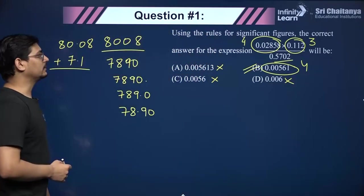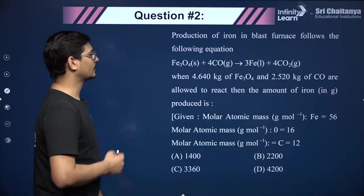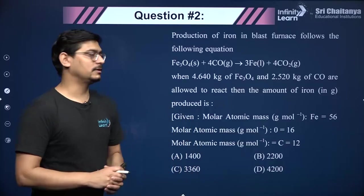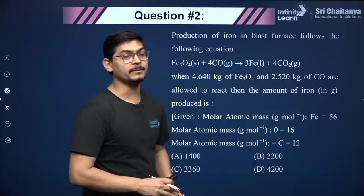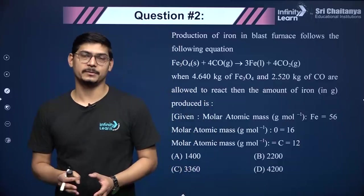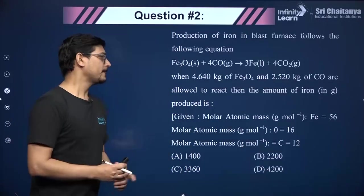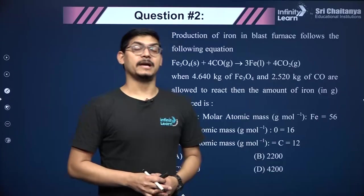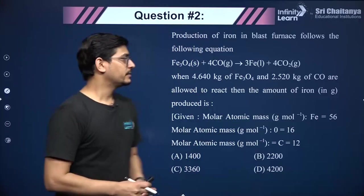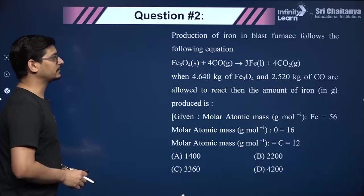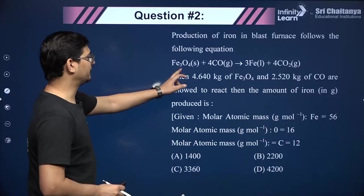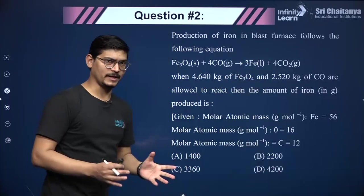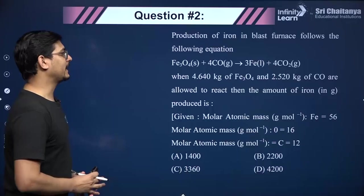Moving to the next question — it is generally seen that JEE asks questions based on stoichiometry and the limiting reagent. Limiting reactant is something very important, and in such questions you should be very careful with the calculations. The equation given is: Fe₃O₄ + 4CO → 3Fe + 4CO₂. The masses of both reactants are given: 4.64 kg of Fe₃O₄ and 2.52 kg of carbon monoxide.